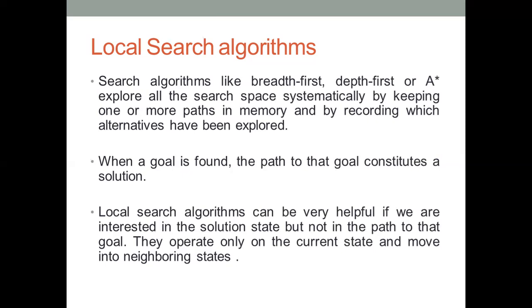For your water jug problem, we have the initial state and we know the goal state. The path we take to reach from the initial state to goal state is very important. When this path is very important, we can go ahead with any of the searching algorithms we have discussed so far. But there are some other algorithms, like local search algorithms, which just focus on the current possible node alone.